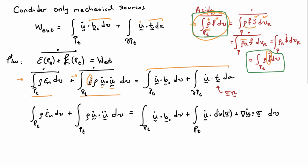On the right-hand side, we replace the traction using Cauchy's law, expressing it in terms of the stress tensor. We then apply the divergence theorem to convert the surface integral into a domain integral. Applying the divergence theorem results in the relationship shown, which is easier to see when written out explicitly.